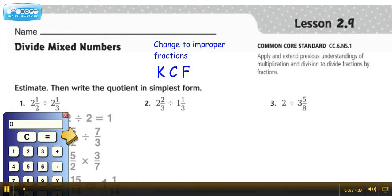The directions: estimate, then write the quotient in simplest form. We're going to take a look at number 2. Now let's first think about what our estimate would be.